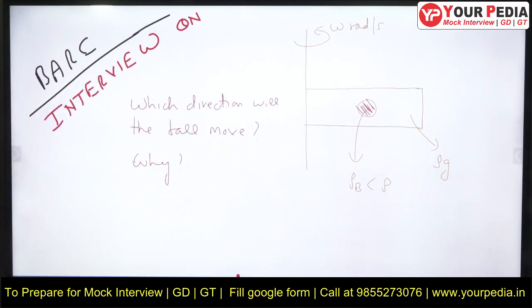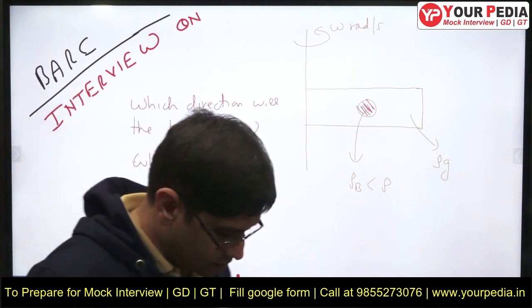So how will you analyze this particular situation? This is a tube containing liquid of specific weight rho g, and the tube is rotating about one of the axis. There is a ball inside the tube. Which direction will the ball go? What answer will you give?